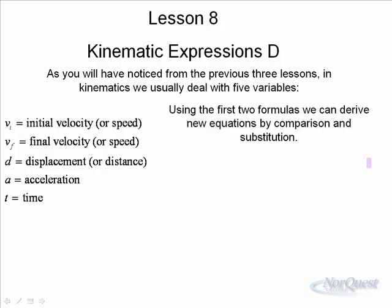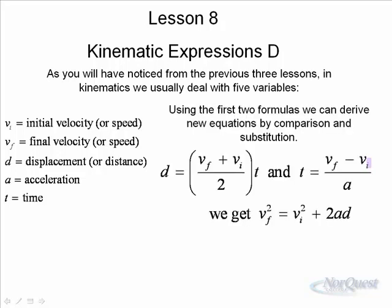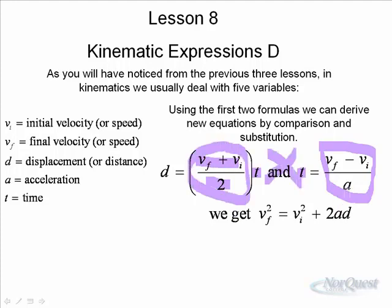So using the first two formulas that we derived, we can substitute by taking this first formula, and t here is also equal to t here. And so instead of writing t in the first equation, we write vf minus vi over a. Substitute by multiplying it by the first part of that expression. So basically, this times the second part when we put them together and then reduce it down,